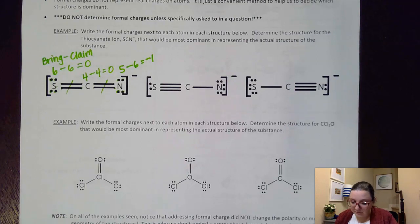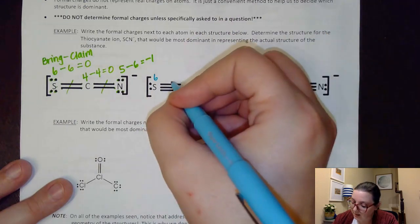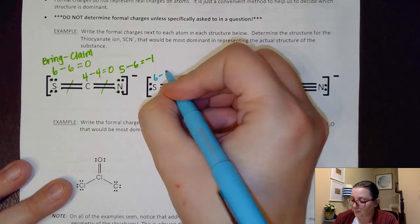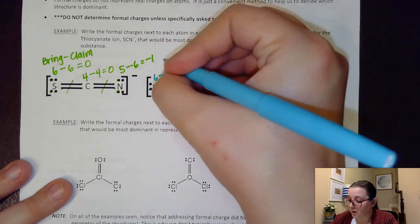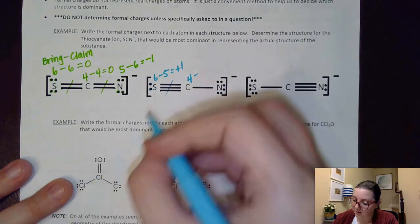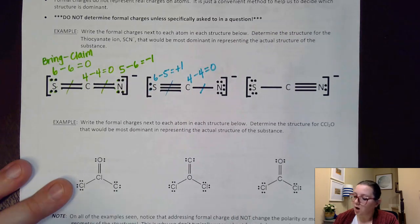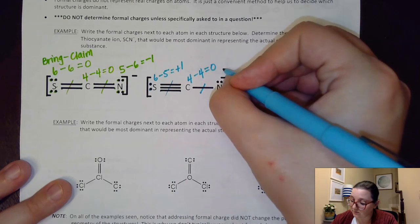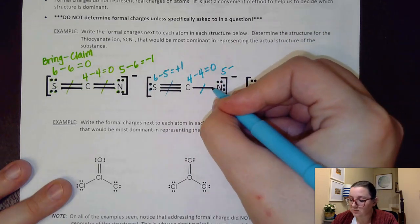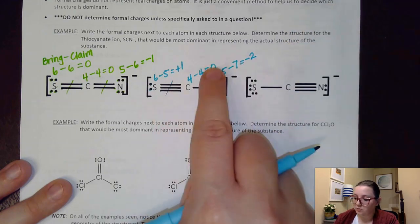For the second structure, sulfur again brings six. Counting what it claims: half of the bond plus the two unshared electrons — one, two, three, four, five. Six minus five gives a formal charge of positive one. Carbon brings four, claims half of each bond — one, two, three, four — formal charge of zero. Nitrogen brings five, claims one, two, three, four, five, six, seven — formal charge of negative two. Positive one plus zero plus negative two tallies to negative one.